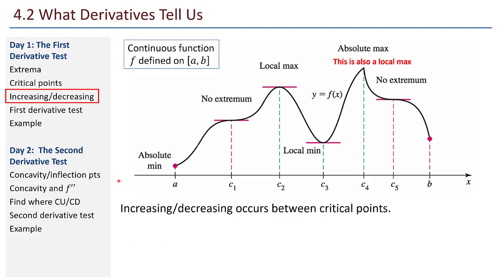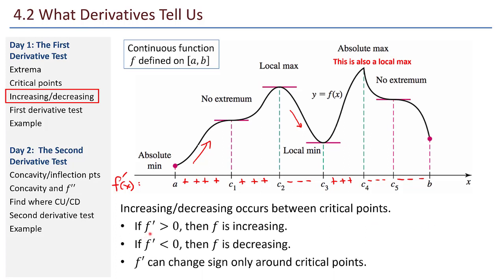Let me write f prime of x on this graph and label where it's positive or negative. Between a and c1, the first derivative is positive — a positive slope means the function is increasing. Between c1 and c2, still positive. Between c2 and c3, the tangent lines will be negative — the derivative is negative. If f prime is positive, then f is increasing. If f prime is negative, then f is decreasing. And that first derivative can change sign only around critical points.